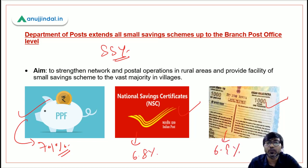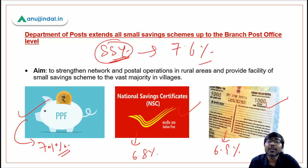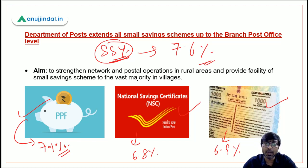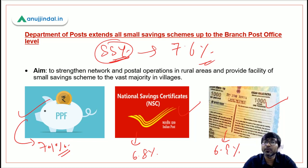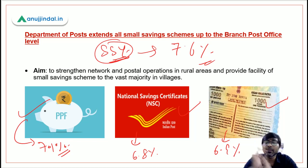NSC gives 6.8% and Kisan Vikas Patra gives 6.9%. The highest return is on Sukanya Samridhi Yojana at 7.6%. These are savings schemes offered through the post office. Previously they were available only in urban areas, but now they have been extended to branch post offices so that rural people can also avail these savings schemes.